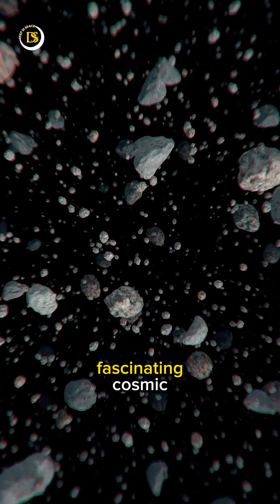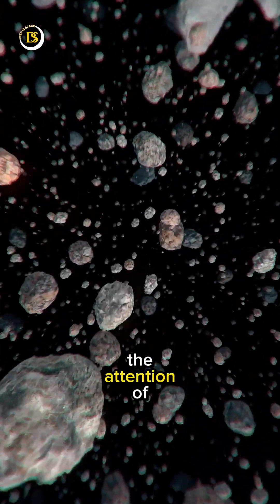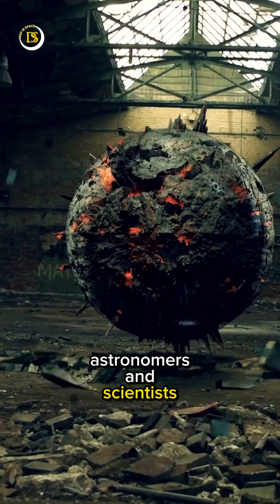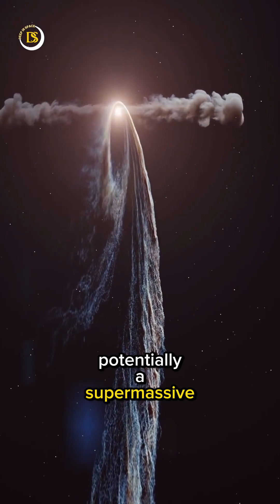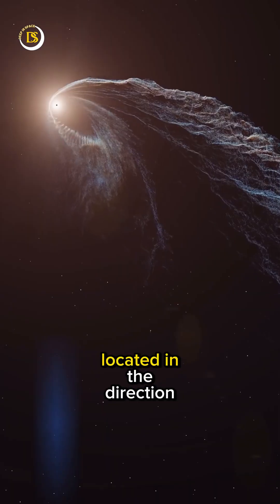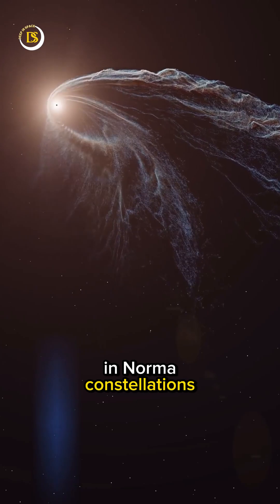The Great Attractor is a fascinating cosmic anomaly that has captured the attention of astronomers and scientists. It is believed to be a massive concentration of matter, potentially a supermassive black hole or a cluster of them, located in the direction of the Centaurus and Norma constellations.